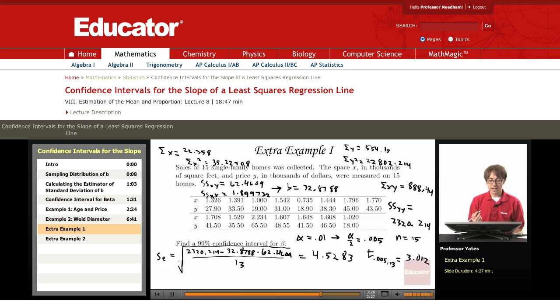So now I could do my confidence interval. I'm taking b, which is 32.8788 plus or minus 3.012 times that 4.5283 over the square root of SSXX, that 1.899732.